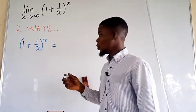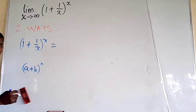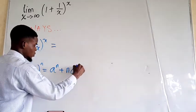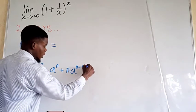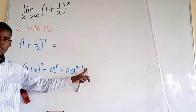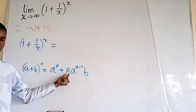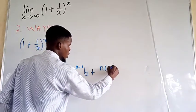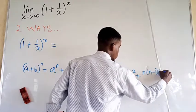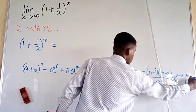As a reminder, the binomial expansion of (a + b)^n gives: a^n + n·a^(n−1)·b + [n(n−1)/2!]·a^(n−2)·b² + [n(n−1)(n−2)/3!]·a^(n−3)·b³ + … and so on. We reduce the power of a by 1 each time and increase the power of b by 1.